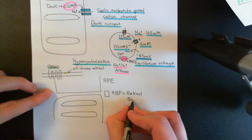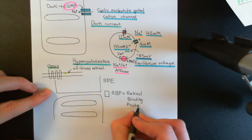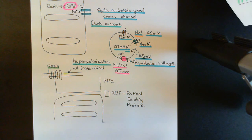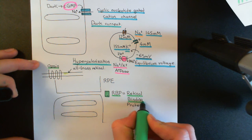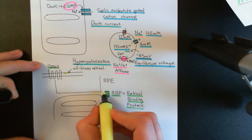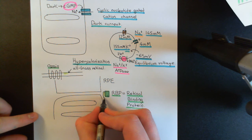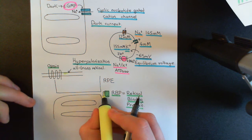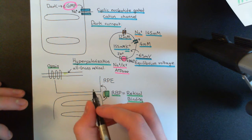This is the retinal binding protein, and as the name suggests, it is used for binding to vitamin A molecules. The all-trans-retinal is very similar to the vitamin A molecule which is all-trans-retinol, so all-trans-retinal will be able to bind to this retinal binding protein as well. So the rod will give the all-trans-retinal molecule to the retinal binding protein, and this will transport it to the retinal pigment epithelium.